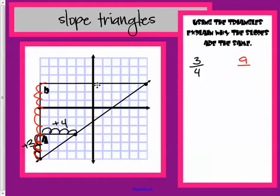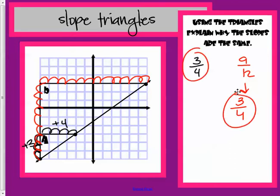So, up nine, and then it goes over one, two, three, four, five, six, seven, eight, nine, ten, eleven, twelve. Nine twelfths simplifies to three-fourths. So, these are the same slopes for triangle B and triangle A.